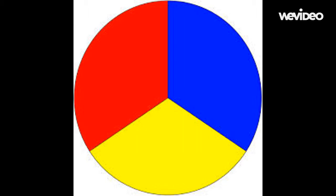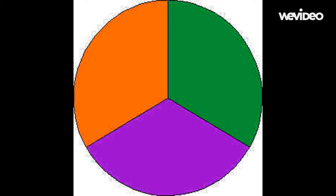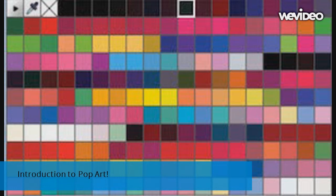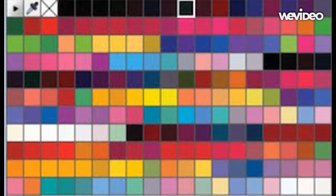We have our secondary colors, which are made when you combine two of the three primary colors. Those consist of purple, green, and orange. Blue and yellow make green, yellow and red make orange, and red and blue make purple. Then we have our tertiary colors, which are made from a combination of both primary and secondary colors — blue-green, red-orange, and other pretty colors in the spectrum. This brings us to our pop art color palette, which features very bright colors consisting of pinks, purples, oranges, blues, and all the vivid colors in between.